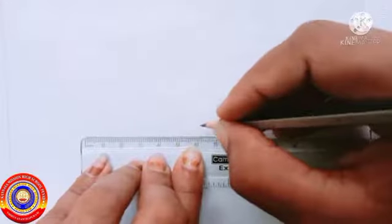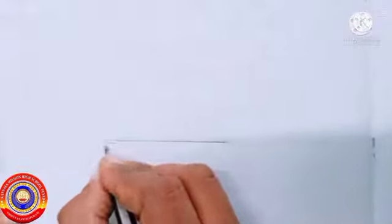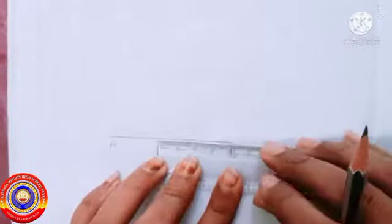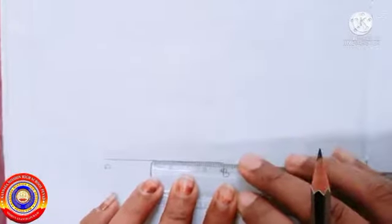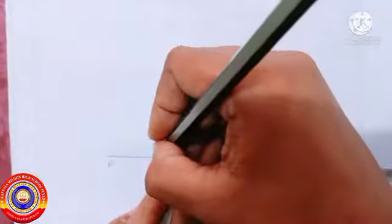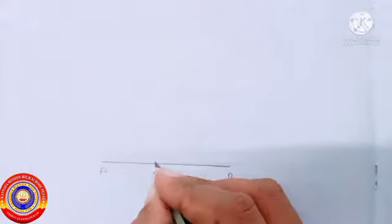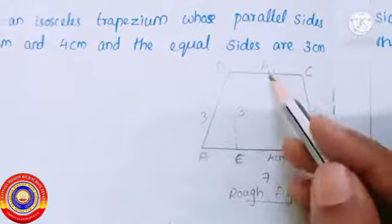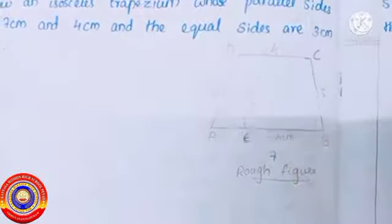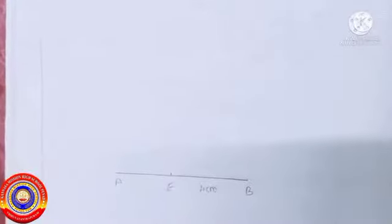With this idea we can draw the figure. Draw AB seven centimeter long and mark E on AB such that EB is equal to four centimeter. Using a ruler, measure four centimeter from B and mark the point as E. EB is equal to four centimeter because the length of the opposite side DC is equal to four centimeter.